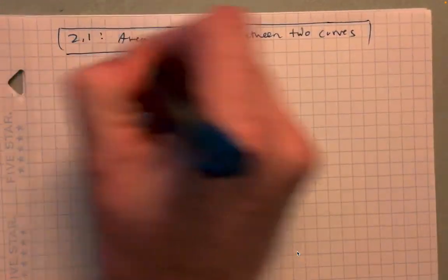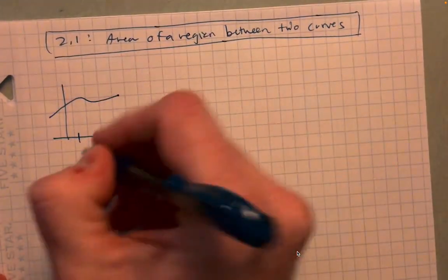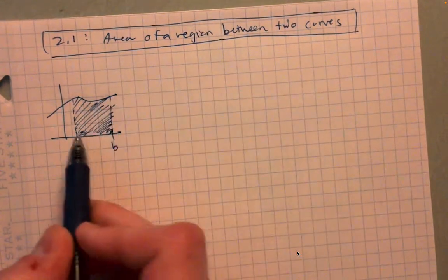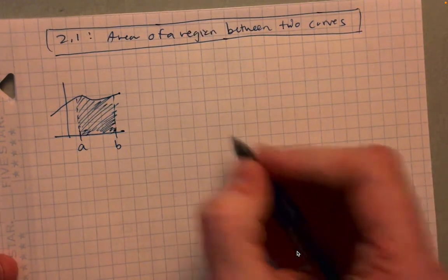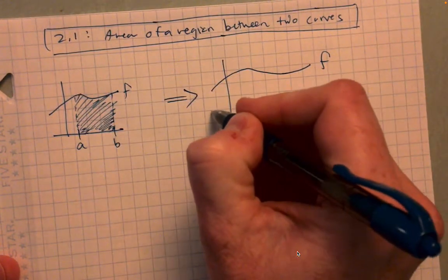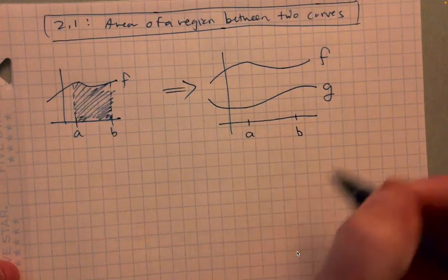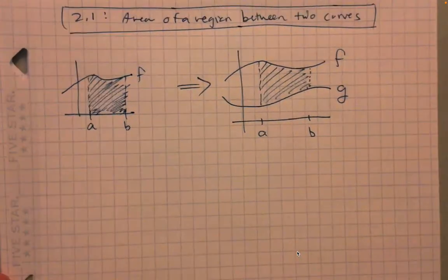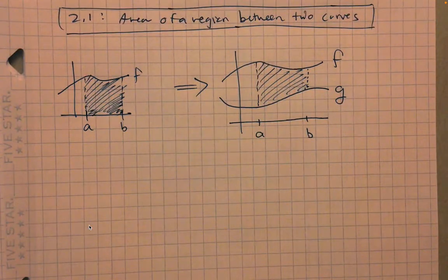So we'll call this section 2.1: the area of a region between two curves. Up until now, our definite integrals — if we had a function and we were interested in the integral between a and b — that was basically giving us the area under the curve between the two lines x equals a and x equals b, and above the x-axis. What we're going to move into is a scenario where we have a function f and another function g, and what we're interested in is not the area all the way to the x-axis, but the area specifically between the two functions — the area of the region bounded by the two curves.